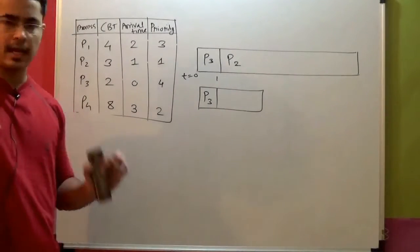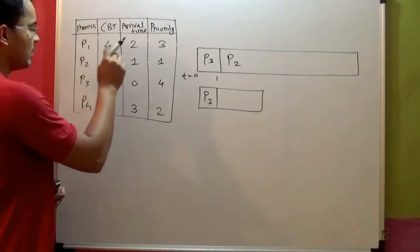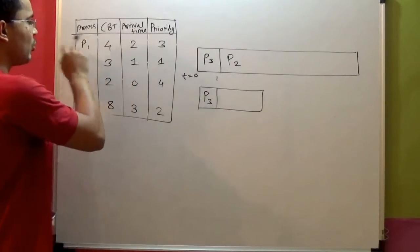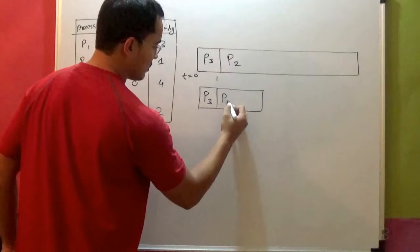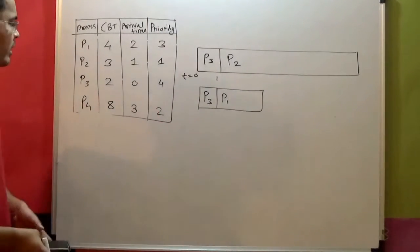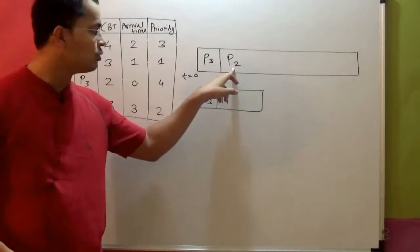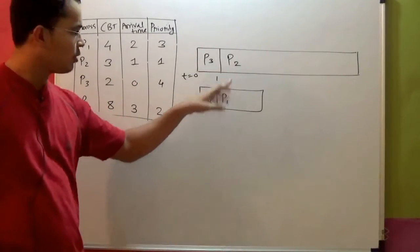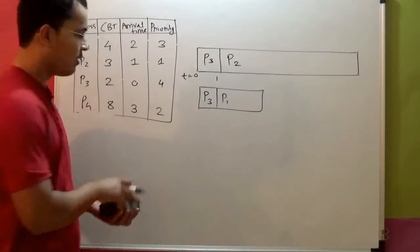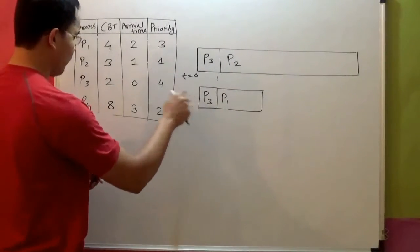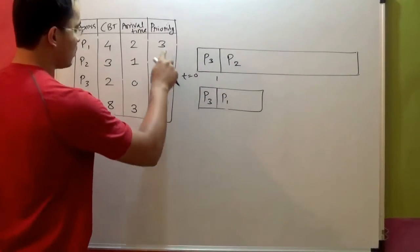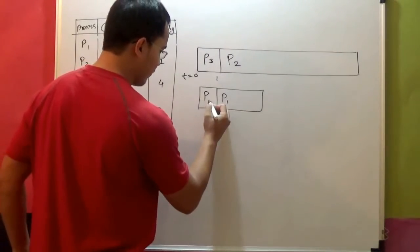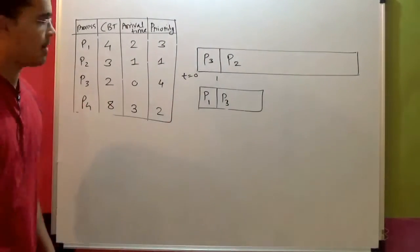This will remain as it is till time equal to 2 seconds. At time equal to 2 seconds, a new process arrives, that is P1. Now P1's priority is 3. Compare it to P2 - P2's priority is 1, so P2's priority is higher than P1, so P2 will keep on executing. Now in the queue, priority of P3 is 4, P1 is 3, so priority of P1 is more than P3. So in the queue, P1 will get ahead of P3, and P2 will keep on executing.